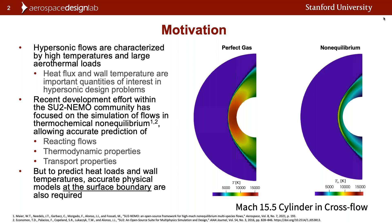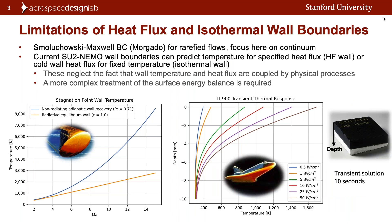This highlights the importance of capturing additional physics. To predict heat loads and wall temperatures specifically, you need accurate physical models at the surface boundary in addition to within the flow field itself. I want to talk about some limitations of the boundaries currently in the SU2-NEMO framework — focusing primarily on continuum flows, specifically the heat flux and isothermal wall boundary conditions.